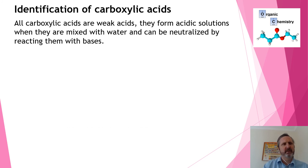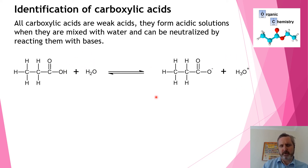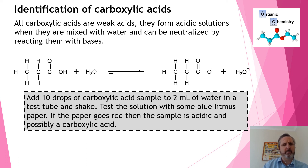To identify carboxylic acids: carboxylic acids are weak acids, so when we put them with water they donate a proton to water and become the alkanoate ion. In this case it's a propanoate ion and a hydronium ion. If we take this aqueous solution and add blue litmus paper, it will turn red. Another test is to add the acid to a solution of sodium carbonate — the acid plus carbonate produces a salt plus carbon dioxide gas plus water, so you'll see bubbles of CO2.